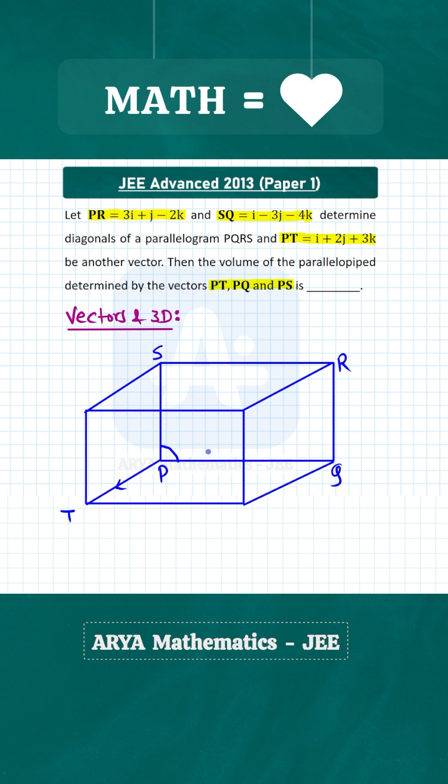Now we have to find the volume of the parallelepiped formed by these three vectors PT, PQ, and PS. Now let us call these vectors as A, B, and C. Let us say this is vector A, PS this is vector B, and PT this is vector C.